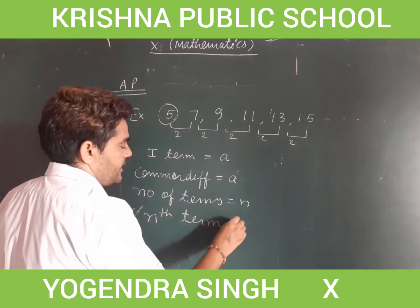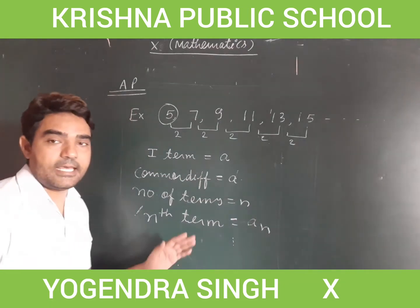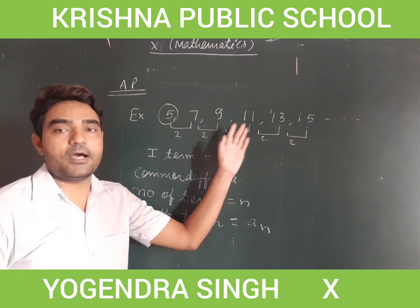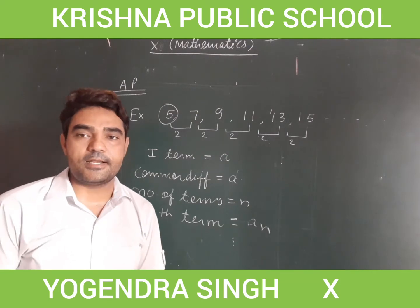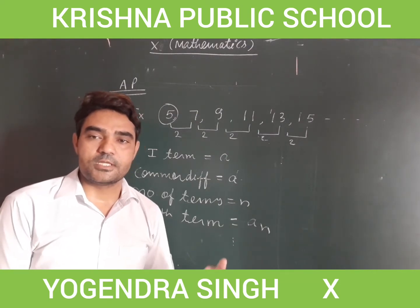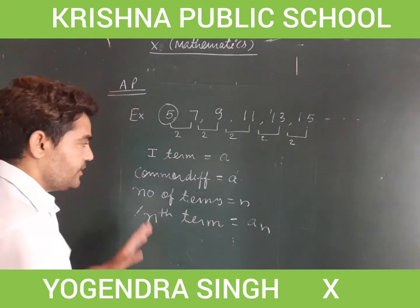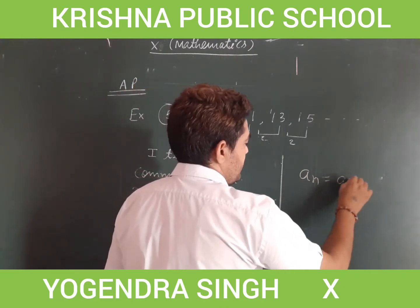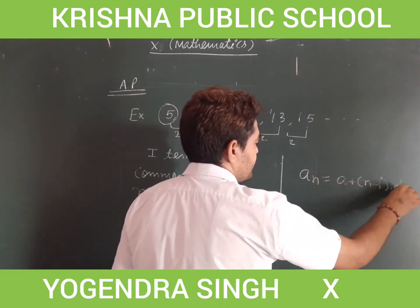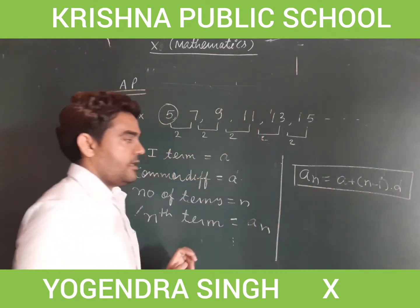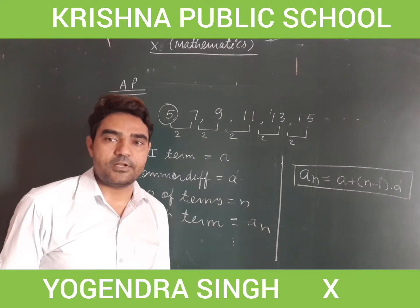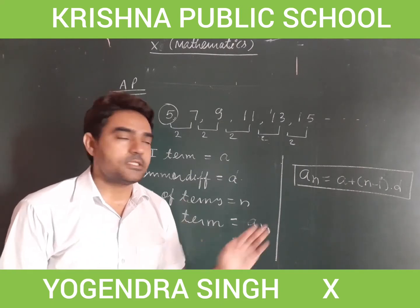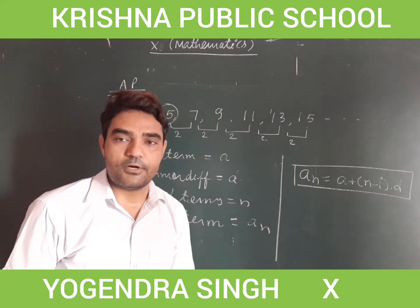The nth term is called aₙ. For example, the fifth term, sixth term, fourth term — and further seventh, eighth terms. If we take n as 100, then a₁₀₀ means the hundredth term. Combining these, the formula for the nth term is: aₙ = a + (n − 1) × d, where 'a' is the first term, 'n' is the number of terms, 'd' is the common difference, and aₙ is the nth term.